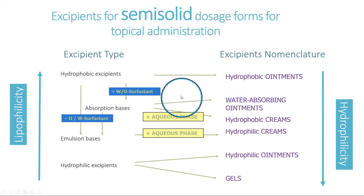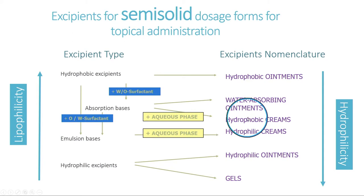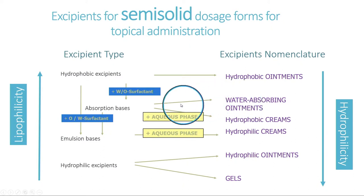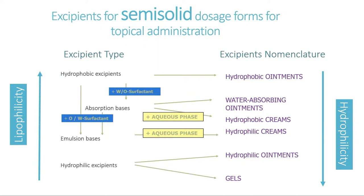Absorption bases applied directly onto the skin with an API are called water-absorbing ointments. Absorption bases can also be used to add an aqueous phase, producing a two-phase system called a hydrophobic cream. Adding an oil-in-water surfactant to the absorption base or directly to the hydrophobic excipient gives emulsion bases, which are never applied directly to skin but are always used to prepare hydrophilic creams by addition of an aqueous phase and APIs.